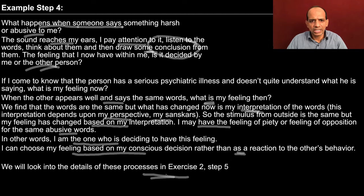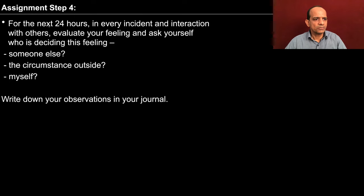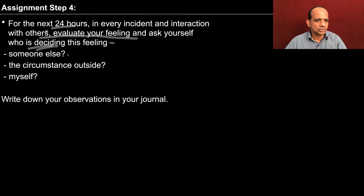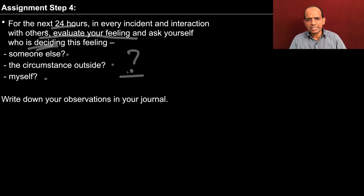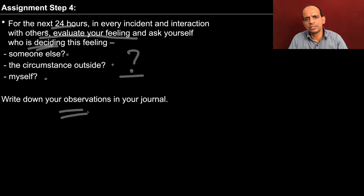You can choose many examples from your day-to-day life once you have gone through step 4. Now you can be more observant of your behavior and try to see how you interpret the other's behavior. There is an assignment: for the next 24 hours, in every incident and interaction with others, evaluate your feeling and ask yourself — who is deciding this feeling? Someone else? The circumstances outside? Or myself? Who is ultimately making the decision? If you are able to see naturally that it is you yourself who is taking the decision, you will see a lot of transformation taking place in your imagination, in your desire, in your thought. Write your observations in your journal and you will see a gradual progress in your imagination and your level of competence.